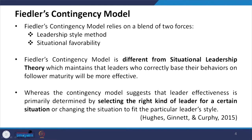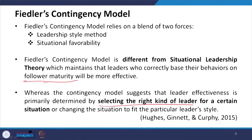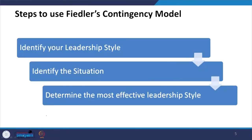We talked about Hersey and Blanchard's model last time — the maturity levels: unable and unwilling, unable and willing, able and unwilling, able and willing — and the telling, selling, participating and directing styles of leadership. In continuation of that, this is another beautiful model by Fred Edward Fiedler, published in Management and Organizational Behavior Classics in 1993. This model has two forces: leadership style methods and situational favorability. Unlike situational leadership theory, which focuses on follower maturity, the contingency model suggests that leader effectiveness is primarily determined by selecting the right kind of leader for a certain situation.